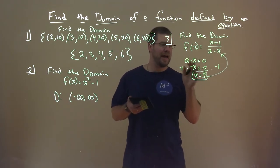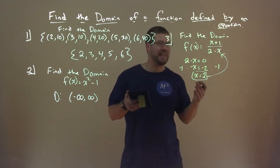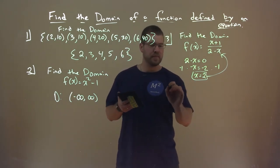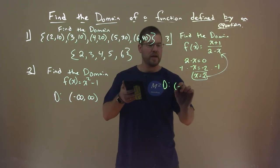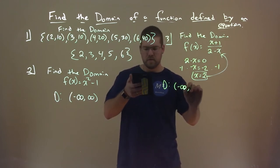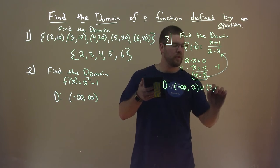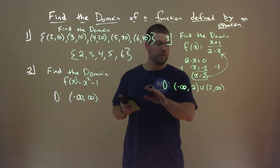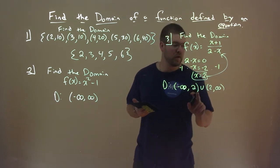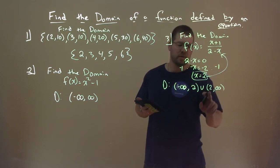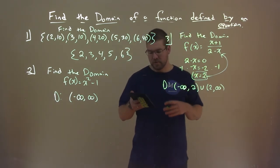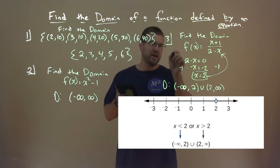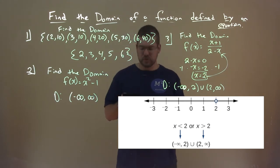So X can't be 2, but it can equal anything else — all real numbers except 2. We show that as: negative infinity to 2, union 2 to positive infinity. X can be any number from negative infinity to 2 but not including 2, and then from 2 to infinity, also not including 2. On a number line, it's all numbers except 2, with an open circle at 2.